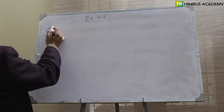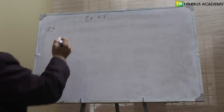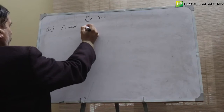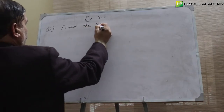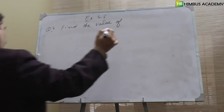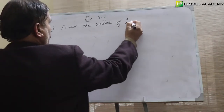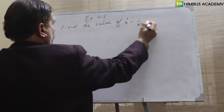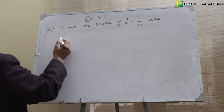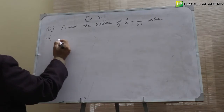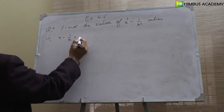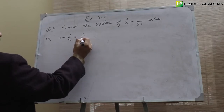Question number 4 ka 2nd part. Find the value of x cube minus 1 over x cube when, number 2, x minus 1 over x is equal to 7 over 3.